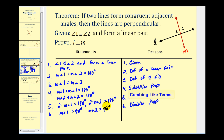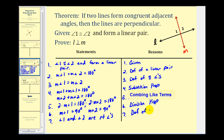And now we're almost there. If these two angles have a measure of ninety degrees, that means angle one and angle two are right angles — by definition of right angles. And now we have it: because if these two lines intersect and form right angles, line L must be perpendicular to line M, by definition of perpendicular lines.